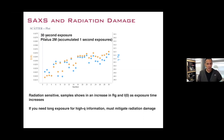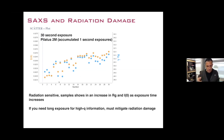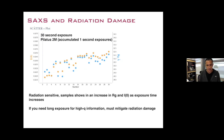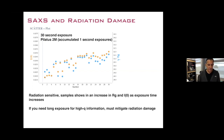The other thing that happens in SAXS is radiation damage. Here's a 30-second exposure — 30 frames at one second each. You can see that as we go to 30 seconds, the radius of gyration and I(0) are increasing, informing us that we have radiation damage. If you're going to merge this data you would likely only use the first 2 to 4 frames and discard the rest.